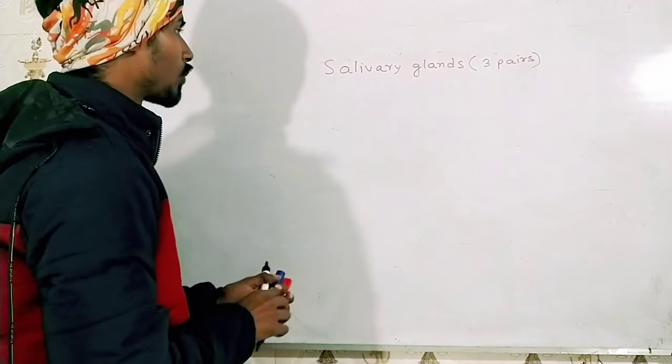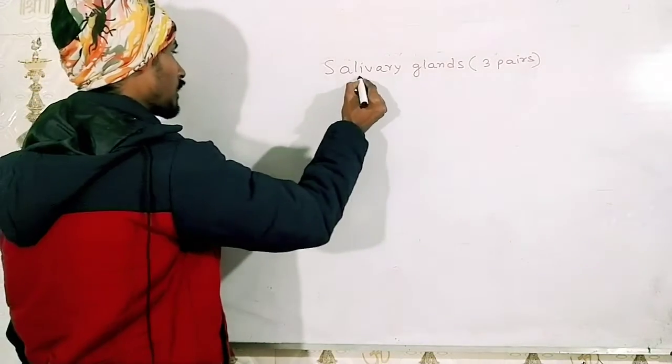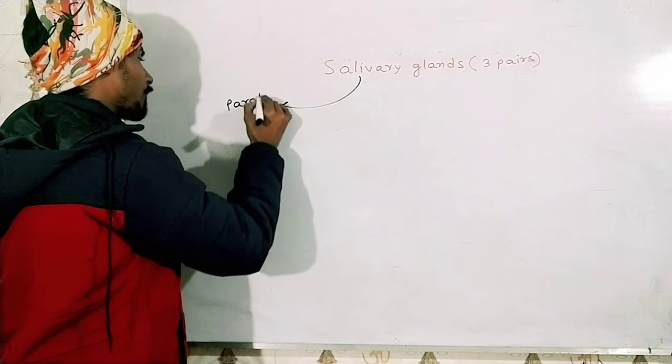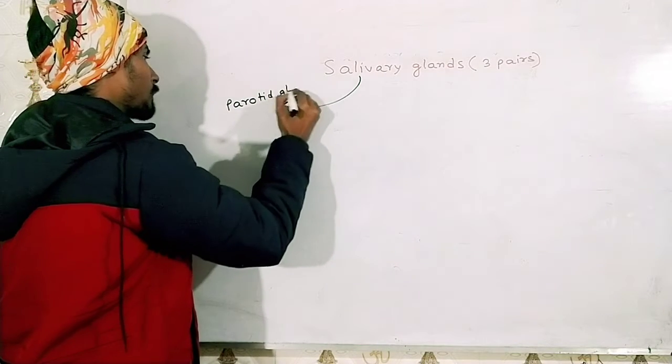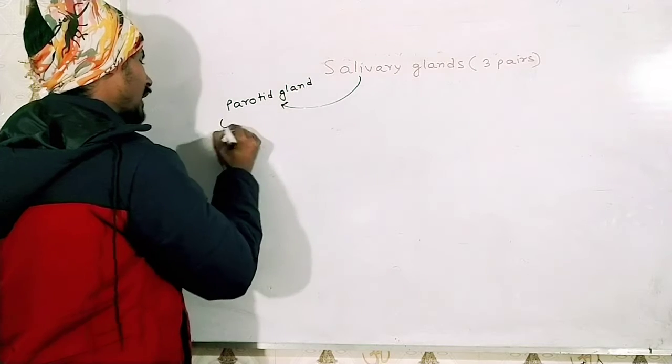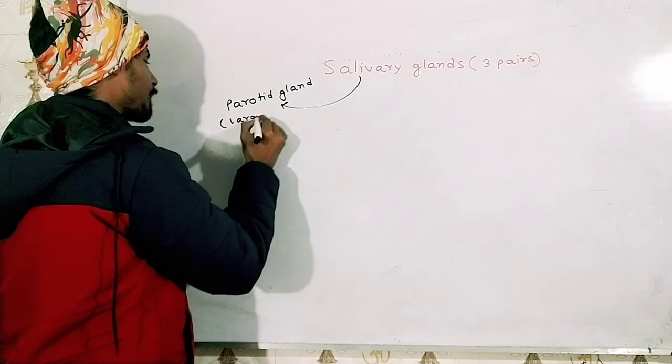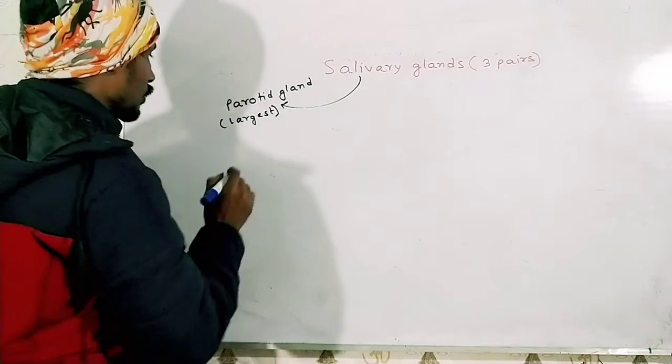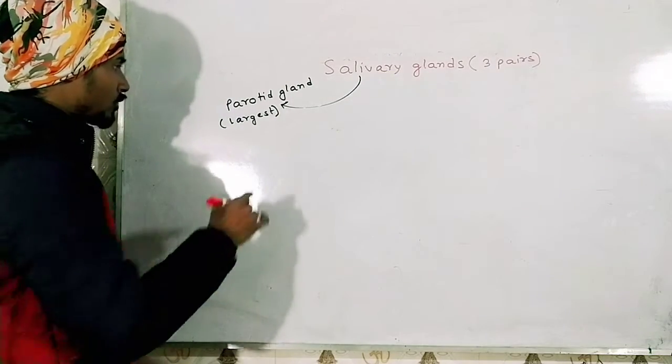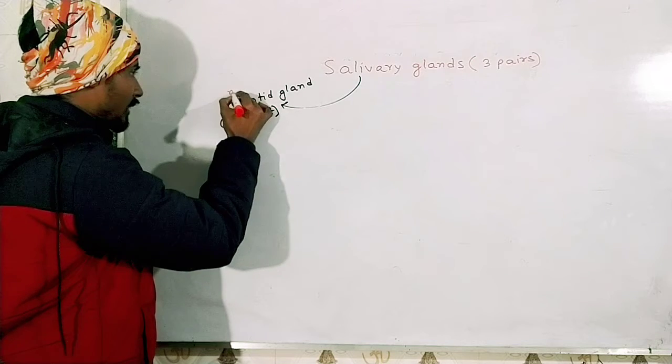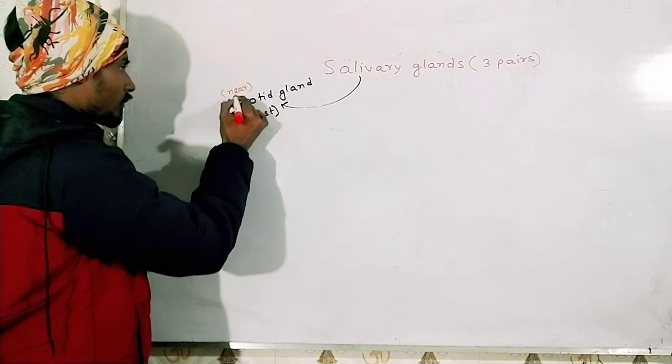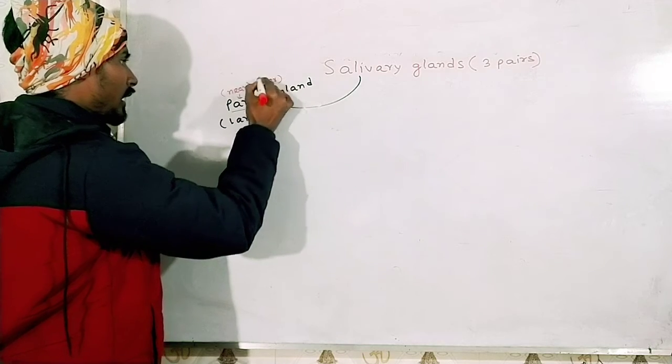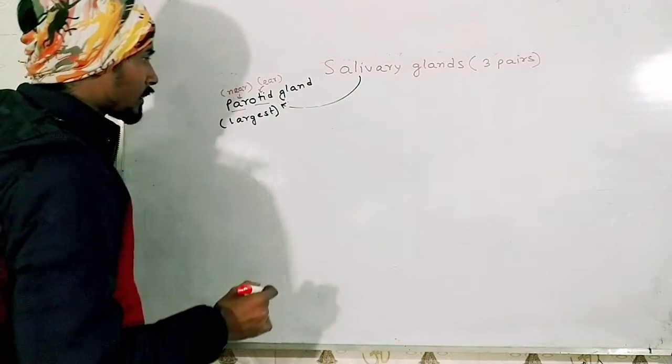Let us discuss them one by one. The first one we are going to discuss is the parotid gland. Now the parotid gland is the largest salivary gland. If you just look at the term, you will get to know that para means near and otic means ear, as it is present near the ear. It is called parotid gland.